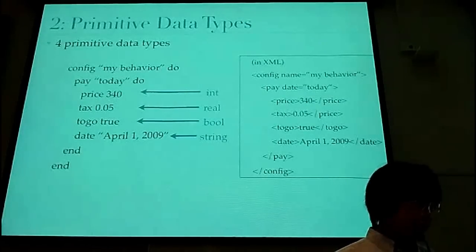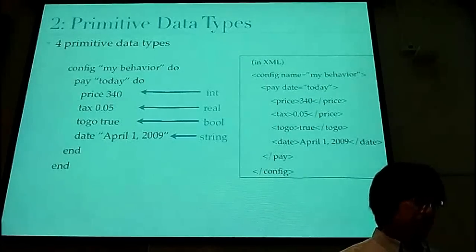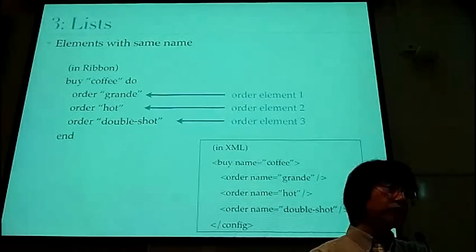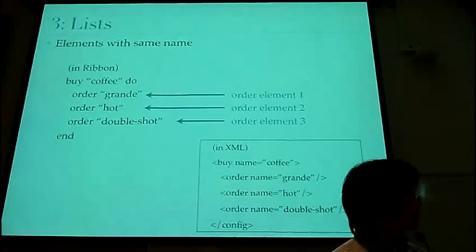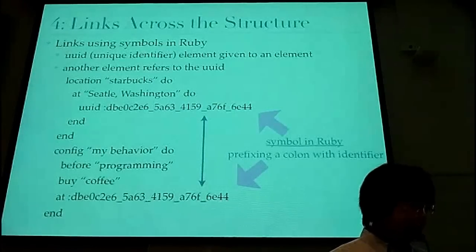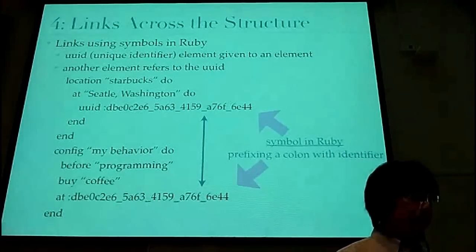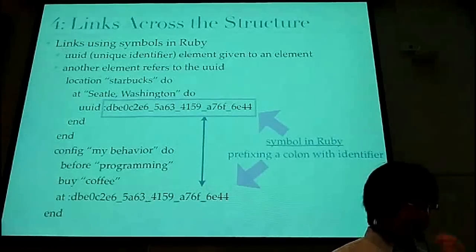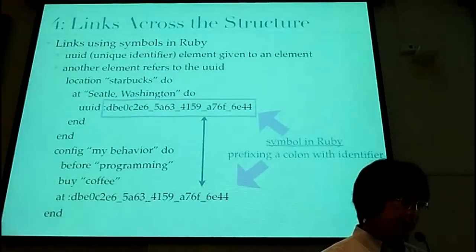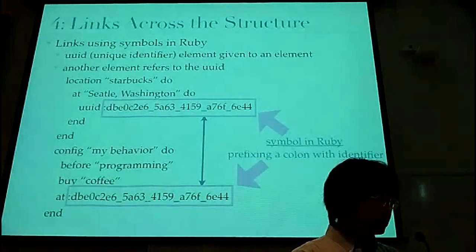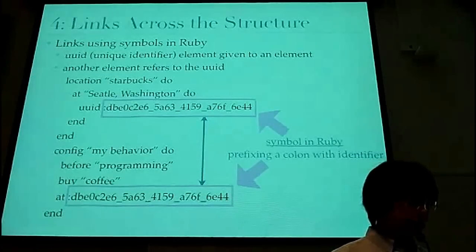Ribbon supports primitive data types: integer, real, boolean, string — very simple. These are represented by elements with the same name. There are three order elements with values such as grande and double short. Links across the structure are represented using symbols in Ruby. A symbol in Ruby is defined by prefixing a colon to an identifier. A UUID element is given to an element — it means the UUID of that element is a specific value. Another element refers to it using a symbol. These elements share only one object. The symbol for UUID is generated in Ribbon's classes, but we can change the value manually.